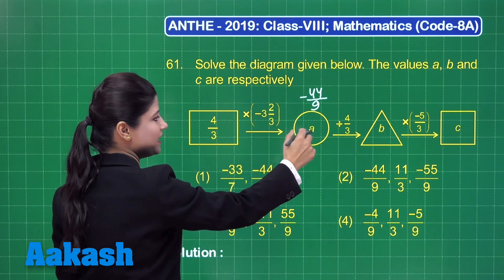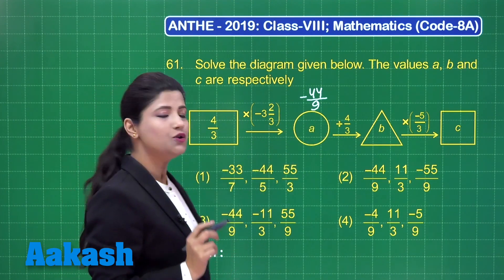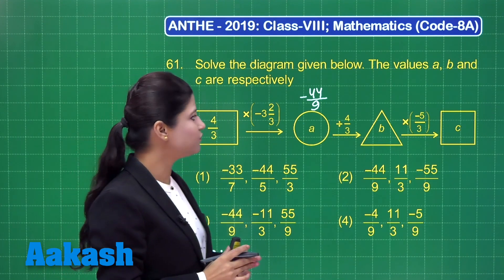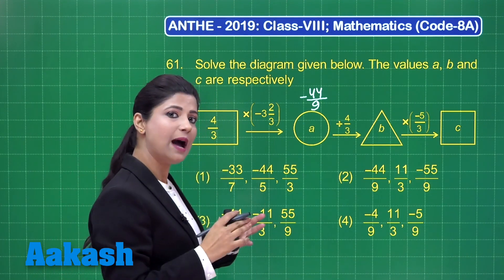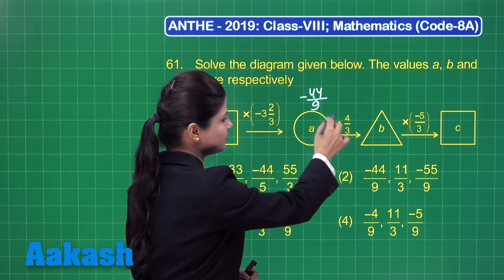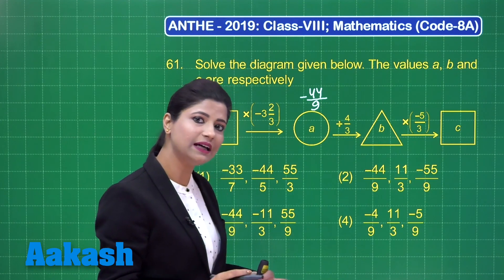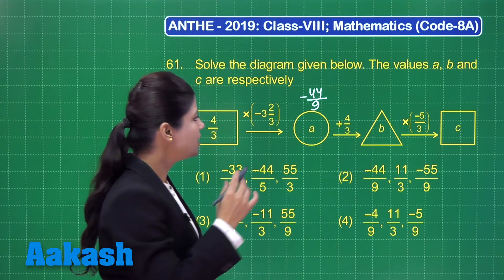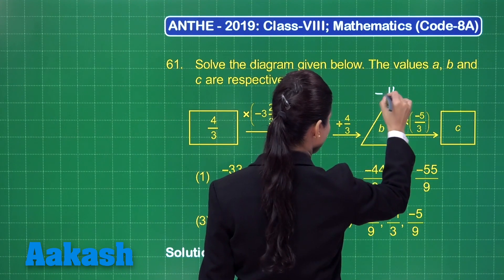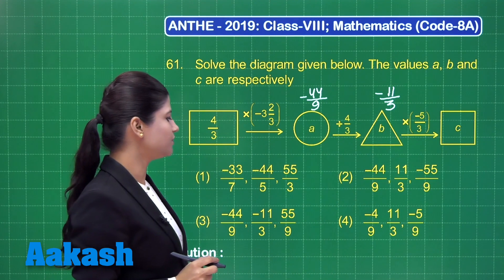Next, it states that A is divided by 4 by 3. So we have minus 44 upon 9. When you divide by 4 by 3, you multiply by its inverse, 3 upon 4. So minus 44 upon 9 into 3 by 4 reduces to minus 11 upon 3. I am getting B as minus 11 upon 3.